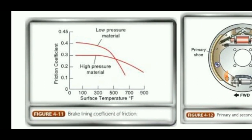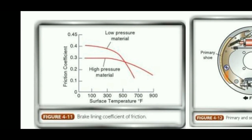This is a graph of brake lining coefficient of friction. When we apply some sort of brake, the heat due to friction increases. This is a friction coefficient and surface temperature graph — at low temperature there is a high amount of friction coefficient, but when the temperature increases rapidly or gradually, the friction coefficient comes down drastically.